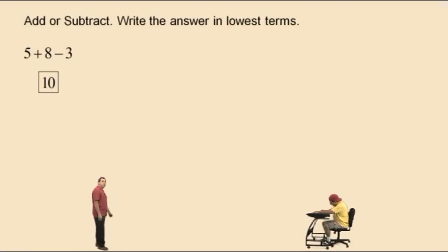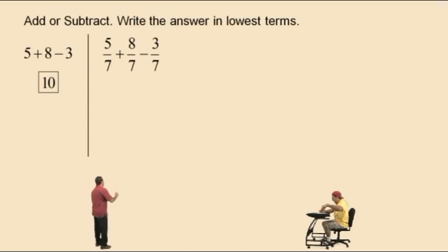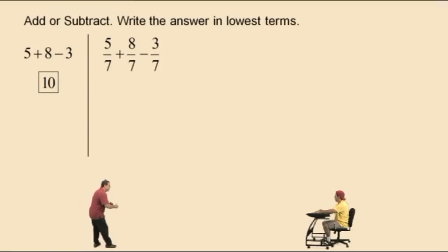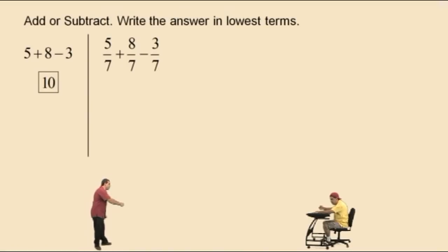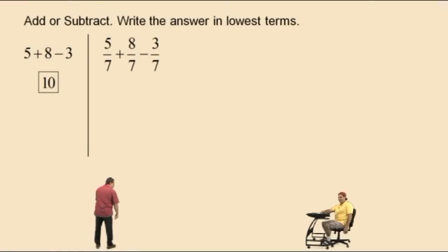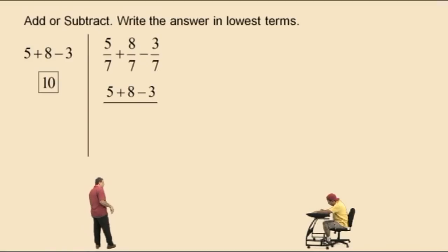Ten. All right, now here we have fractions with the same denominator, so it's basically the same problem — it's just that these are sevenths. So Charlie, what's 5 sevenths plus 8 sevenths subtract 3 sevenths? Ten sevenths. That's right, it's ten sevenths. It's like saying 5 apples plus 8 apples take away 3 apples gives you ten apples. So notice we take our numerators and write 5 plus 8 subtract 3, and these are sevenths, so our answer is ten sevenths.